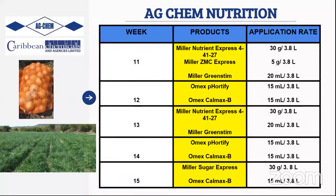Week fourteen mixes Fortify with Calmax B. To finish the program and maximize bulb weight and size, Sugar Express — a high-potassium product — is introduced, since the plant requires high potassium during this phase. Fifteen minutes after application, potassium moves from the foliage to the bulb. To prevent cracking or splitting from excess potassium-driven expansion, Calmax B is included to supply calcium that supports the expanding bulb tissue.